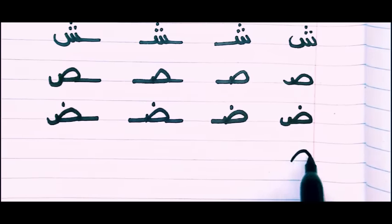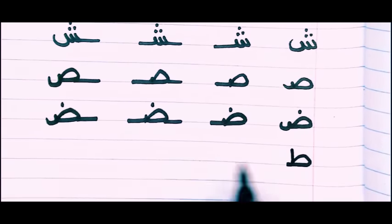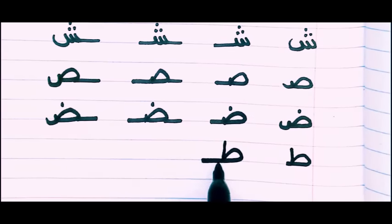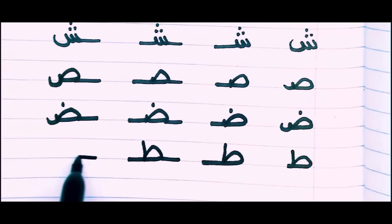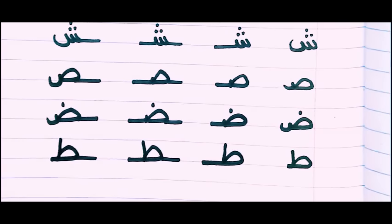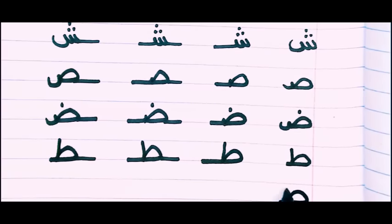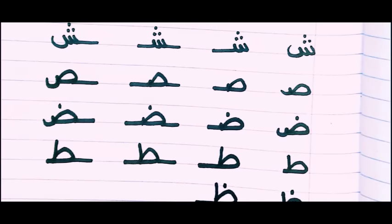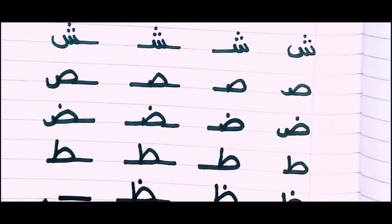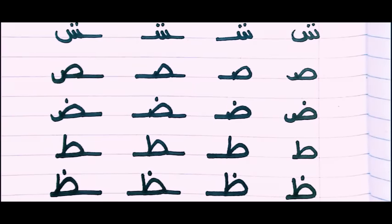For To, you write the isolated form, then make the connecting line so it connects before and after. At the end, it stays as the isolated form. For Tha, you make the connecting line a little more obvious, connect it before and after, and it takes the isolated form at the end. So: Sad, Dad, To, and Tha.